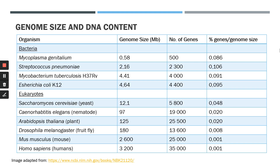Now in this table, we have a comparison of the number of genes versus the genome size in different organisms. If you look at the bacteria, the smallest one being Mycoplasma genitalium with a genome size of 0.58 megabases, and E. coli strain K12 having a larger genome size of 4.64 megabases. The number of genes ranges from 500 in Mycoplasma genitalium, 2,300 in Streptococcus pneumoniae, and 4,000 in Mycobacterium tuberculosis, and these gene numbers correlate with the genome size.